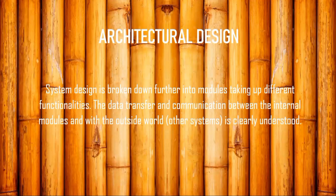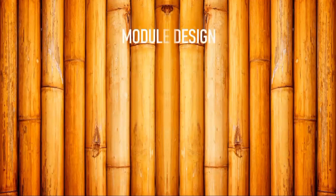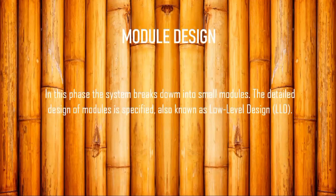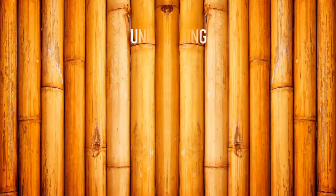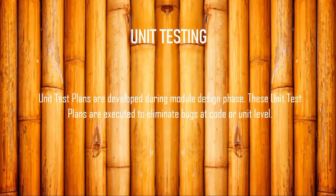Speaking about module design: each system is broken into multiple sub-modules — this is also known as the overall design. All sub-modules are successfully executed and combined together. Next comes coding: all the internal operations and coding of the project are done in the coding phase, and once the coding phase is done we move directly to unit testing.